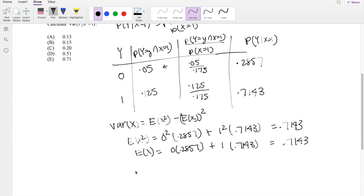Right? So then our variance finally is equal to 0.7143 minus 0.7143 squared, which equals 0.2040, which is approximately equal to 0.2, which is our answer C.